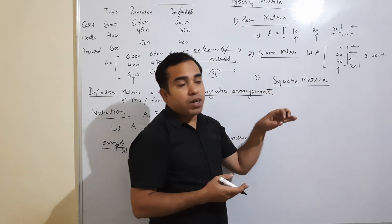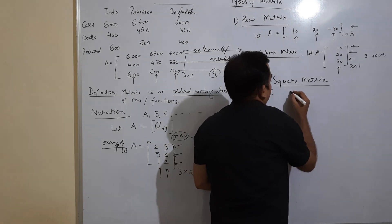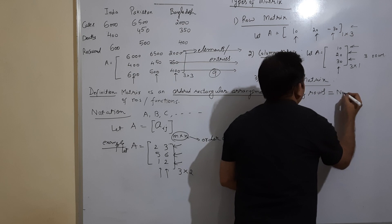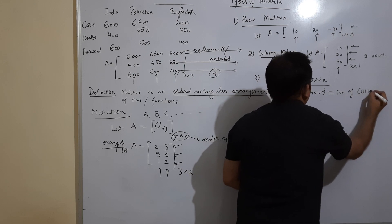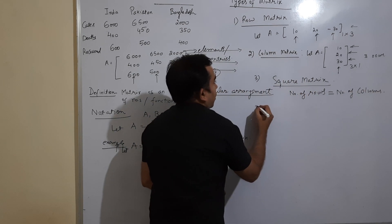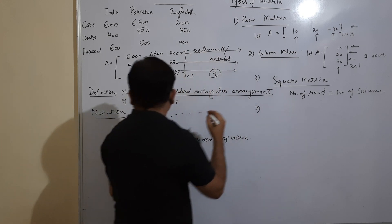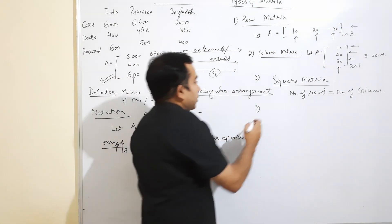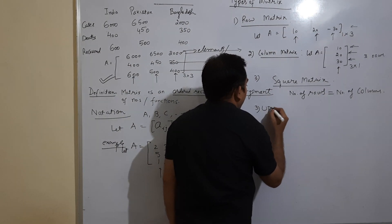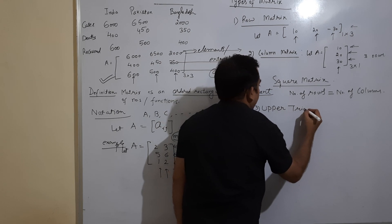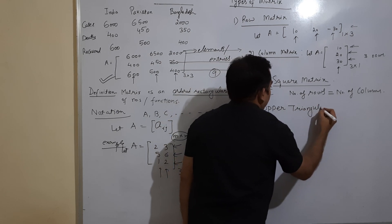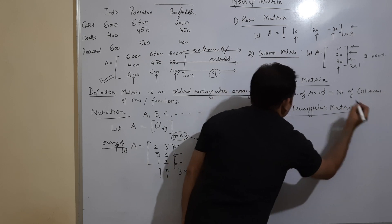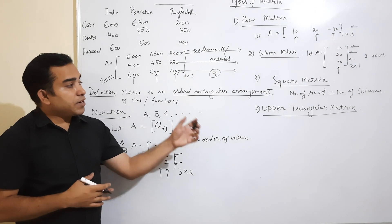Before understanding upper triangular matrix, let us understand square matrix. A square matrix is one in which the number of rows and columns are the same — the number of rows equals the number of columns. This is a square matrix.